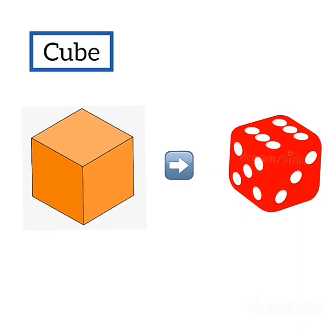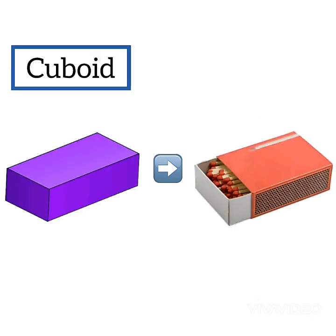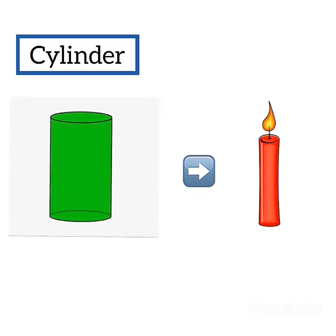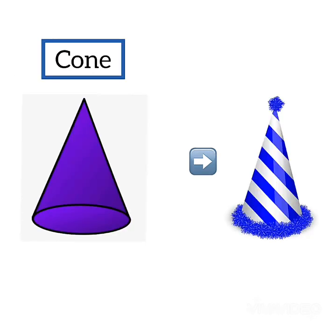Cube — the shape of this dice is like a cube. Cuboid — the shape of this matchstick is like a cuboid. Cylinder — the shape of this candle is like a cylinder. Cone — the shape of this cap is like a cone.